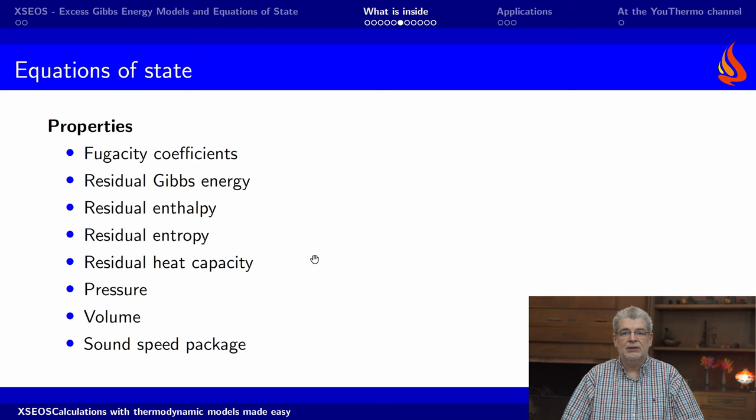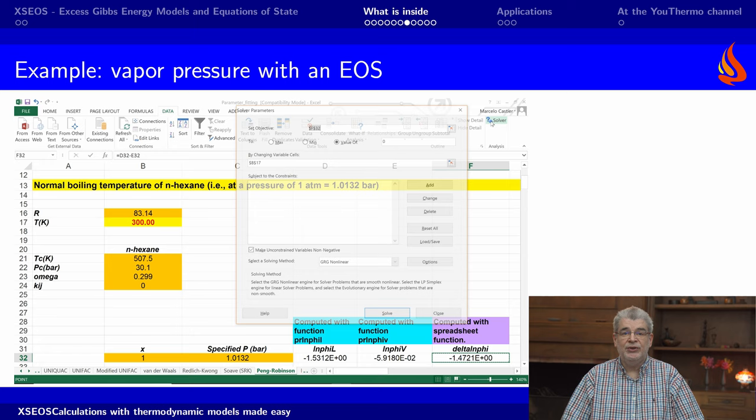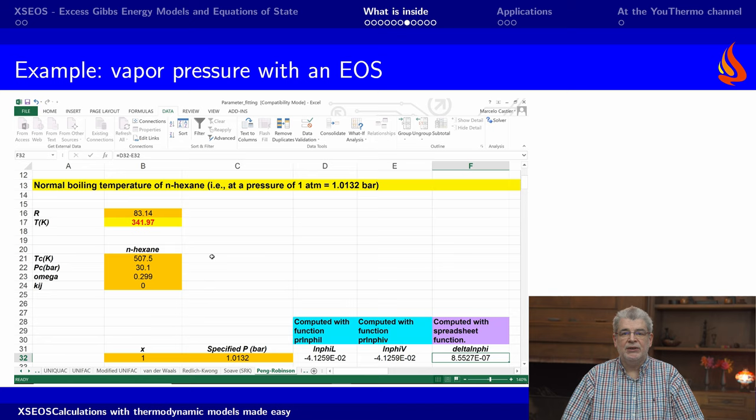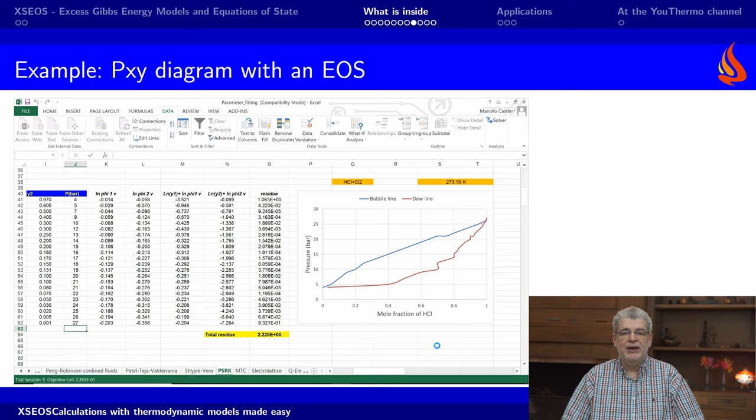Here is an example in which the fugacity coefficients calculated with an equation of state are used to find the vapor pressure of a pure substance. In this example, an equation of state is used to determine the PXY diagram of a binary mixture. Note that the phase equilibrium condition is calculated simultaneously for all the points.